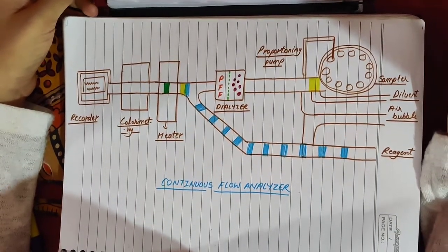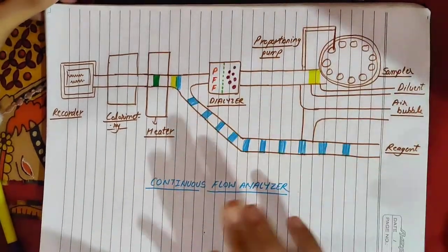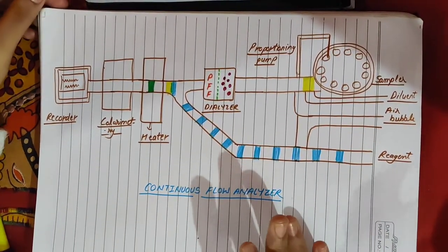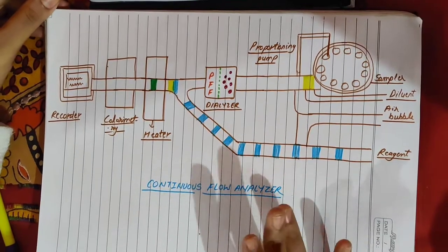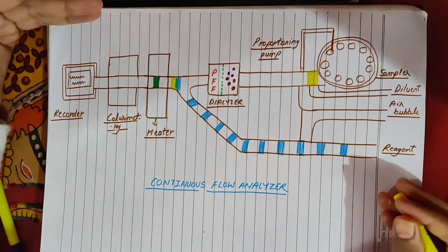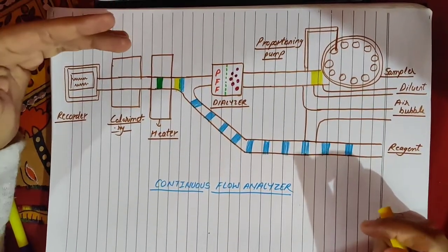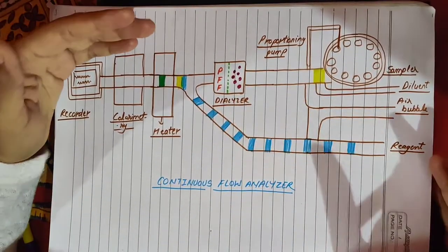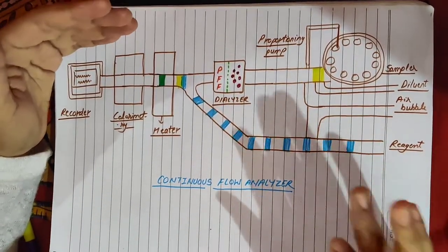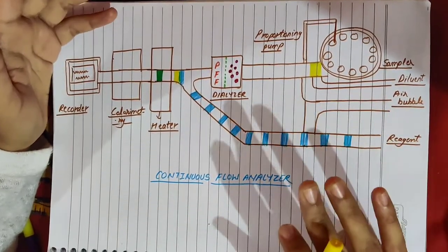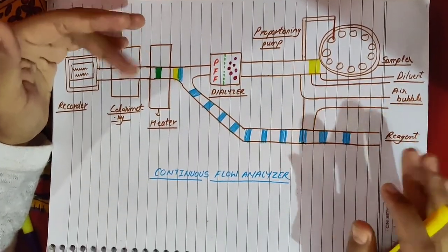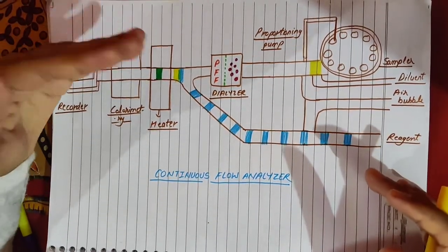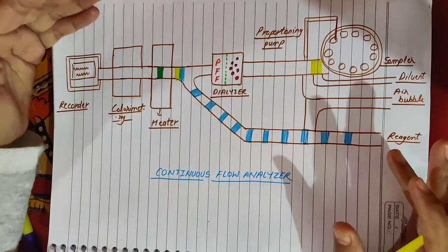Hello everyone, my name is Pranshi Jain. Today our topic is continuous flow analyzer. Continuous flow analyzer is a type of auto analyzer. What is an auto analyzer? Auto analyzer means machines that work automatically. It doesn't work manually — all of the machines work automatically. Analyzer means to analyze, detect, and find.